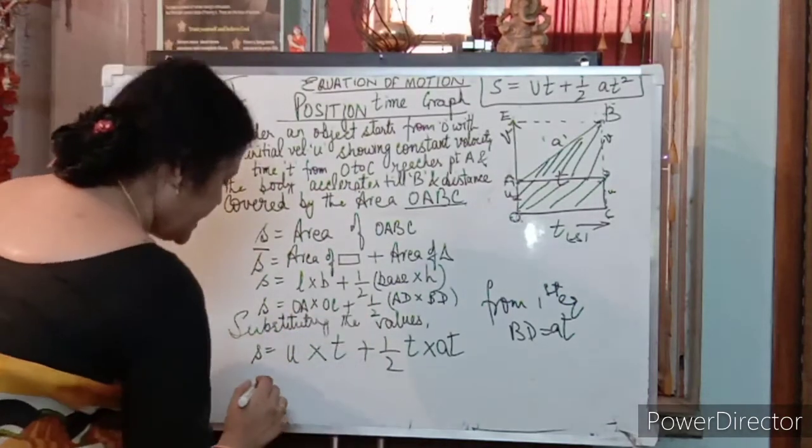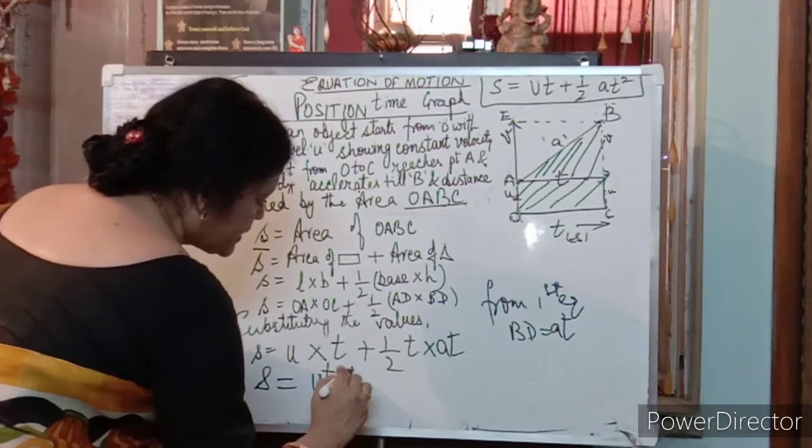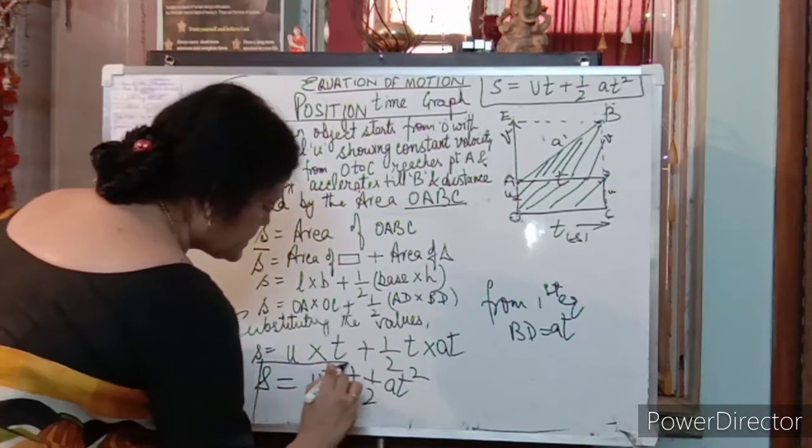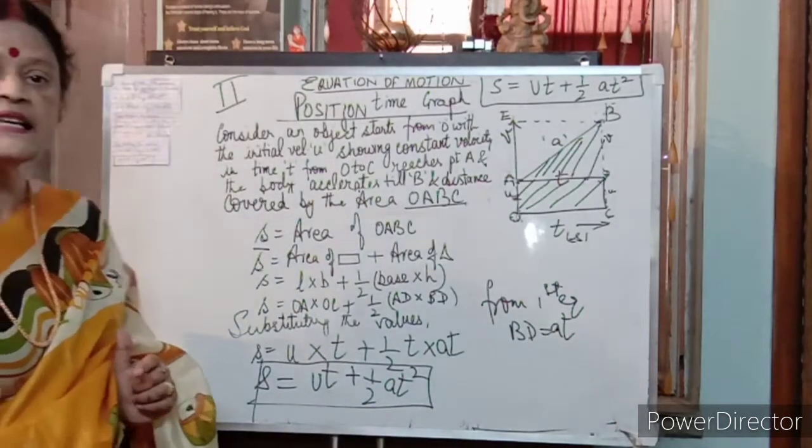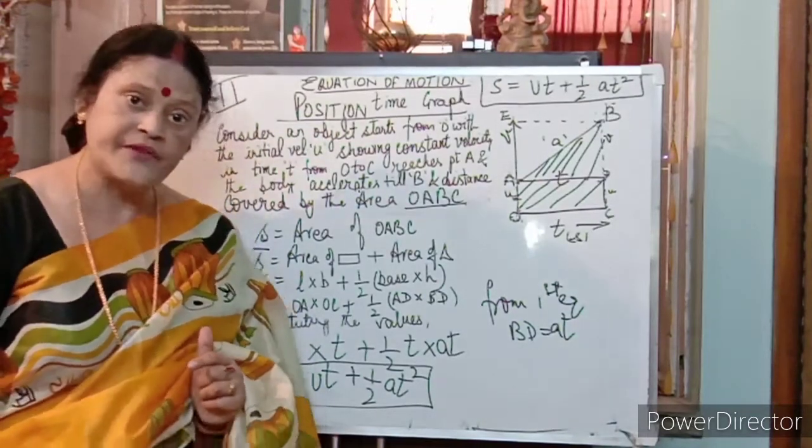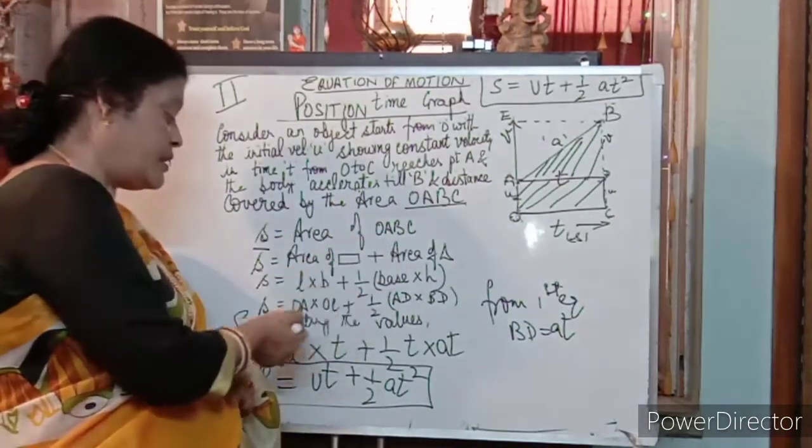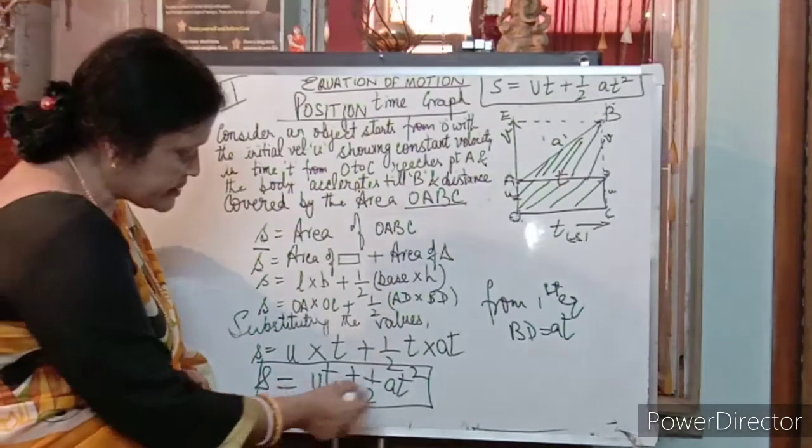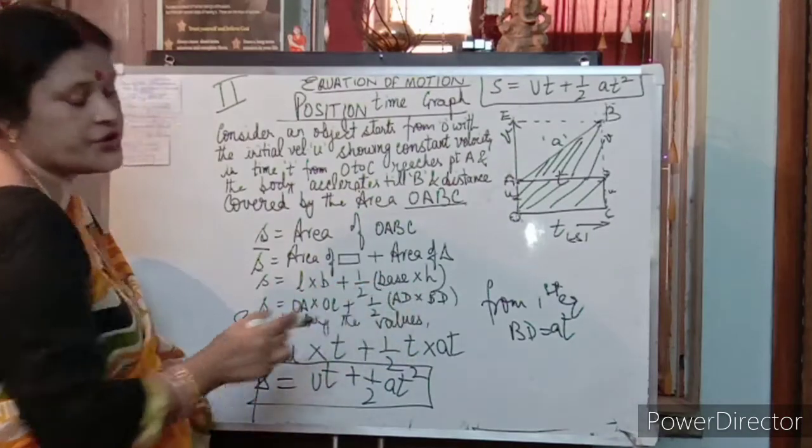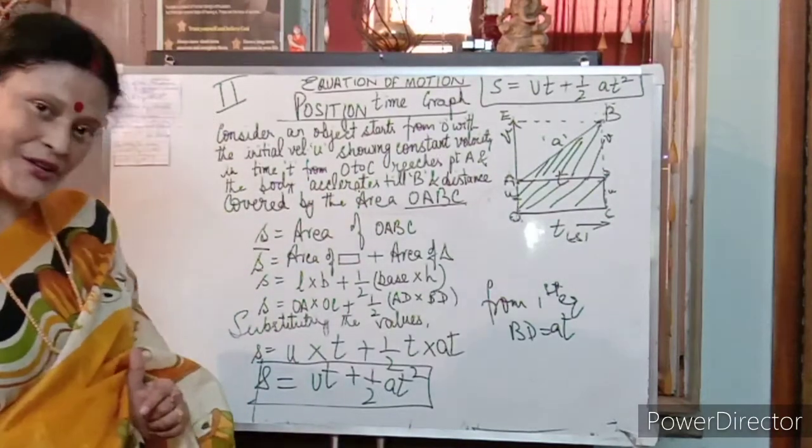Bas, aagya. S is equal to U into T plus half A, T square. This is second equation. See, very easy. We will take the total area, then we will divide it into triangular and rectangular part. Then we will put the geometrical, that is what is the area and all. And you put the values instead of those geometrical positions and then you will get S is equal to U, T plus half A, T square. Bas, aapko length into breadth plus half, base into height ki ye cheez aapko aane chahiye. Woh aap graph se dikh dikh leh langi. Second equation is clear.